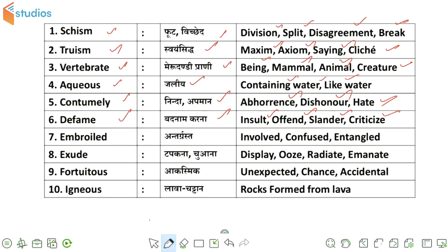अगले word आपके लिए है embroiled, जिसकी Hindi meaning होती है अंतर्ग्रस्त. तो इसके synonyms हैं: involved, confused, and entangled.